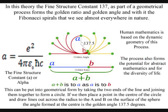If we then place a point in the center of the circle and draw lines out across the radius to the a and b on the surface of the sphere, the angle formed at the center is the golden angle, 137.5 degrees.